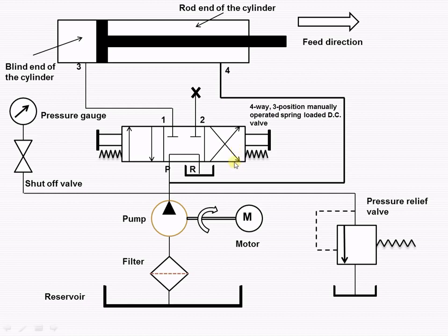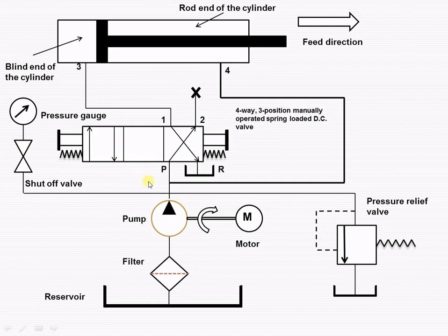When we operate the direction control valve such that the spool of the four-way direction control valve is in the right envelope mode, from port P it tries to go to a particular port but it is blocked. So the fluid enters into the rod end of the cylinder, causing retraction, and the liquid from the blind end from port 3 enters and from port 1 goes to port R.